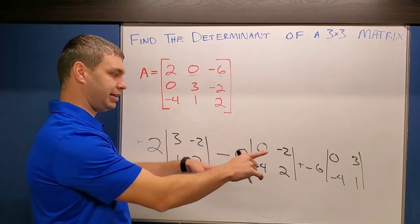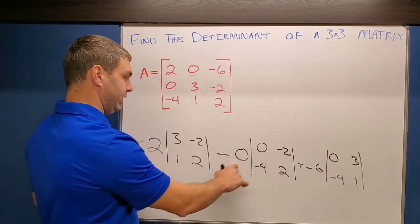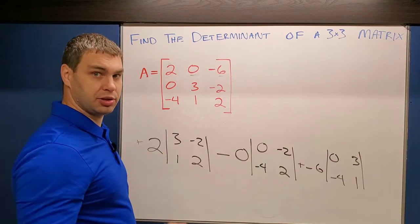So real quick, I'm going to find the determinant of these two by twos. Then we can multiply these minors times those to get our answer. So I'll do this real quick for you.